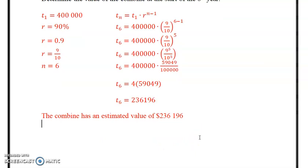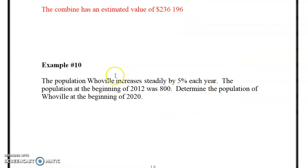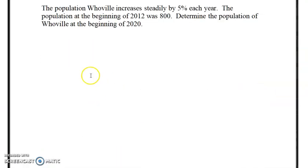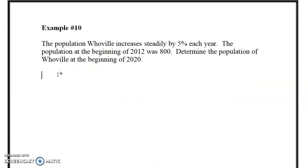And our last example, example 10, it's a population question. It says the population of Whoville steadily increases by 5% each year. The population at the beginning of 2012 was 800. Determine the population at the beginning of 2020.